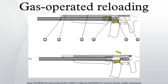Energy from the gas is harnessed through either a port in the barrel or trap at the muzzle. This high-pressure gas impinges on a surface such as a piston head to provide motion for unlocking of the action, extraction of the spent case, ejection, cocking of the hammer or striker, chambering of a fresh cartridge, and locking of the action.